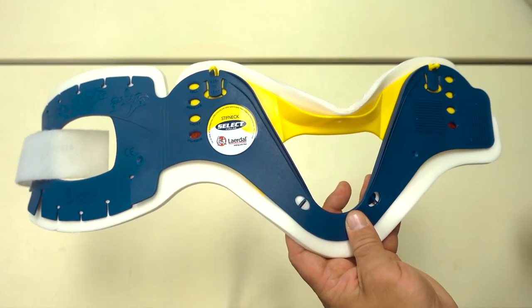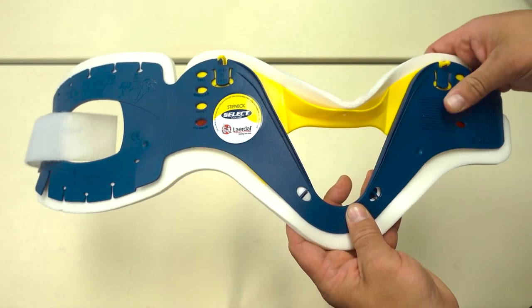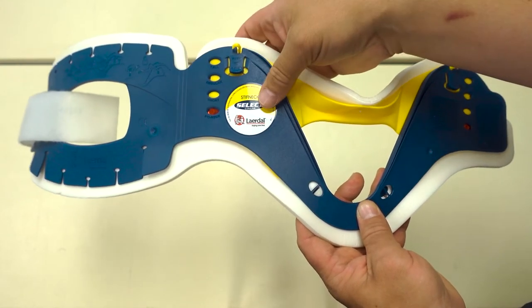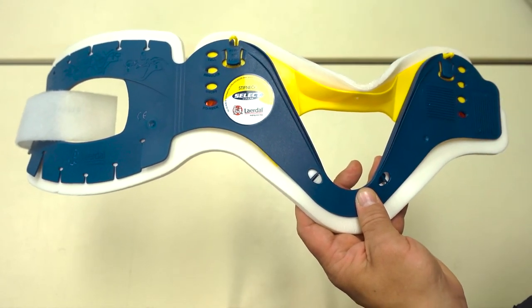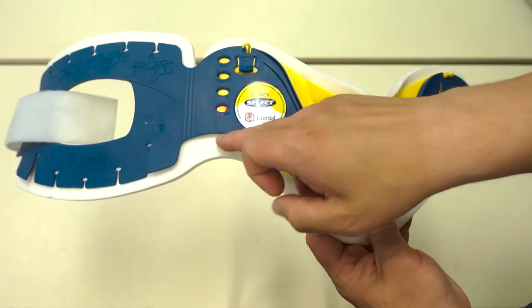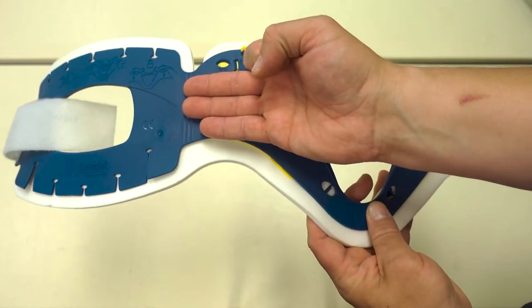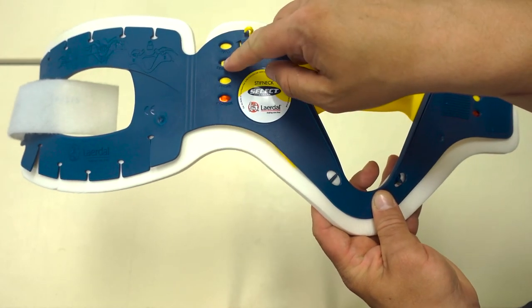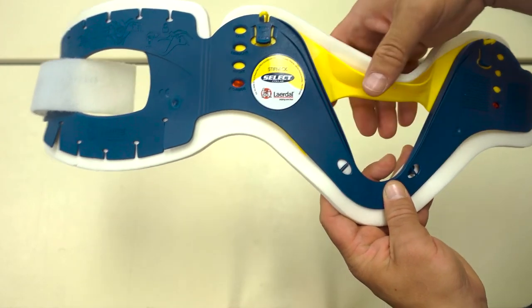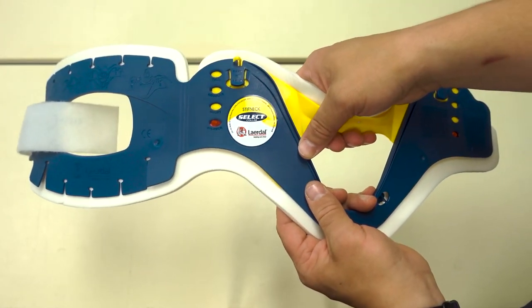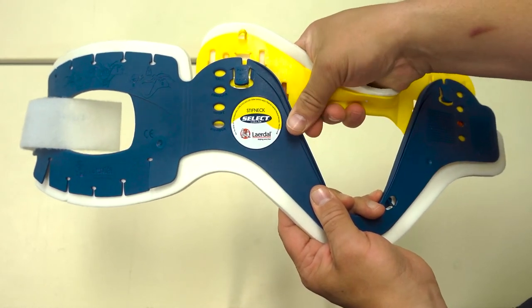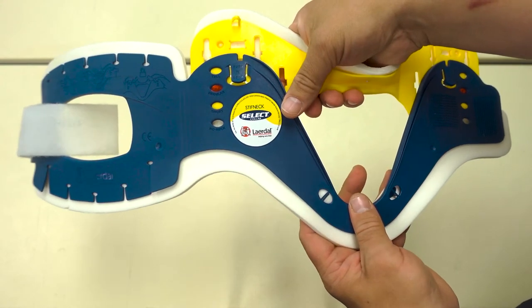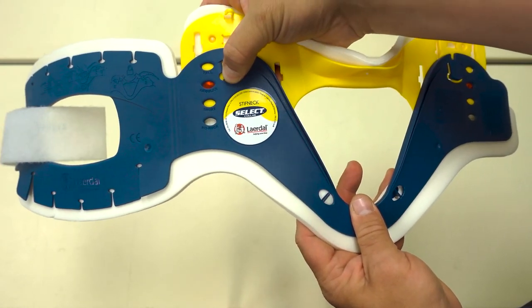To adjust the Laerdal Stiff Neck, if necessary, begin by releasing the locks by pressing on the tabs from behind. Next, using the measure you took from the patient with your fingers, measure from the bottom of the plastic edge to the closest circle. For this one, it will be the third or regular size. Proceed to pull the chin piece up until the red is inside the selected circle. Lastly, press the tabs in to lock.